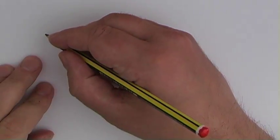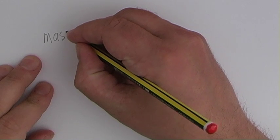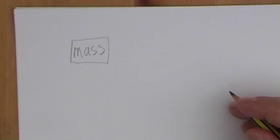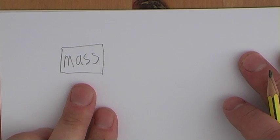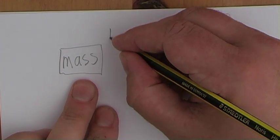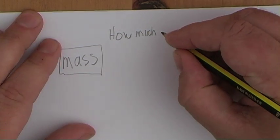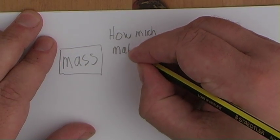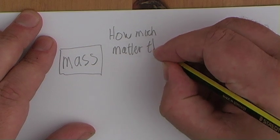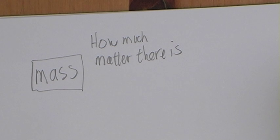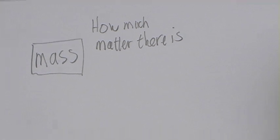The first thing I want to talk about is mass. So what is mass? Mass is actually a measure of a few different things. The first thing it's a measure of is how much matter there is — just how much there is of something, how much matter you have.